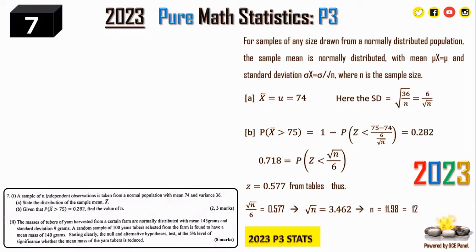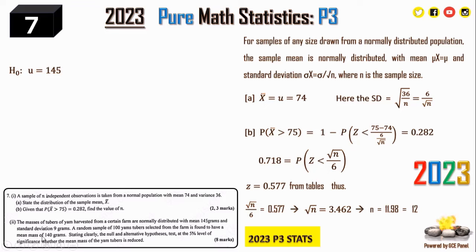For the hypothesis test: H₀: μ = 145 (mean mass unchanged), H₁: μ < 145 (mean mass is reduced). This is a one-tailed test. The sample has n = 100, x̄ = 140, population σ = 9. The test statistic is Z = (140 − 145)/(9/√100) = −5/0.9 = −5.56.